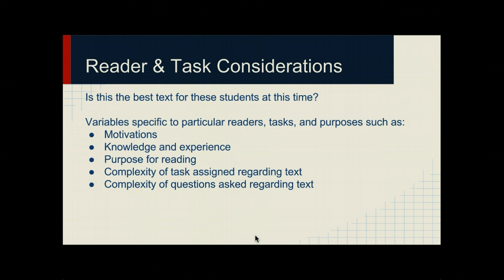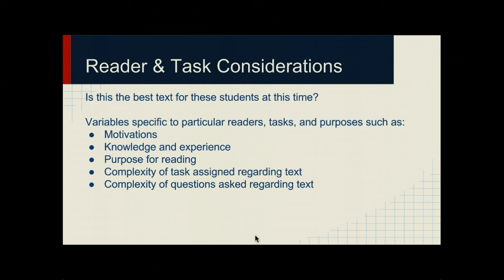There are a lot of variables that are going to affect what kids do. We know from Ed Psych that motivation is one of the contexts and contingencies that affects how kids read, write, and succeed in class. Also, prior knowledge and experience matter — are you teaching science to a student that loves science or is a little bit phobic? The purpose for the reading makes a big difference if you let students know why they're doing a specific activity. The complexity of the task assigned regarding the text, and the complexity of the questions, will also affect whether it's the best text. These last two bullet points speak to Bloom's Taxonomy and the upper levels which push kids to think more critically and creatively.